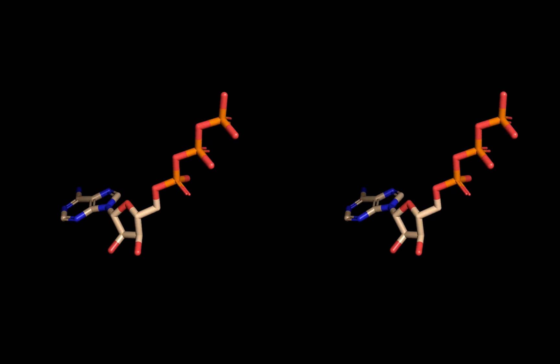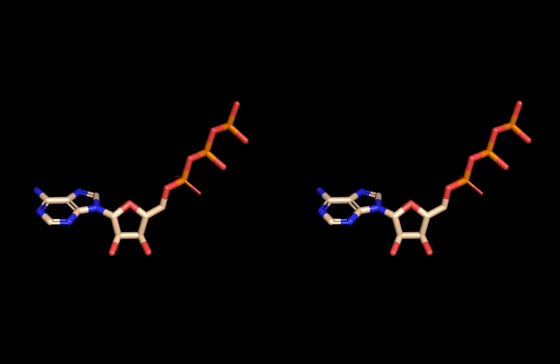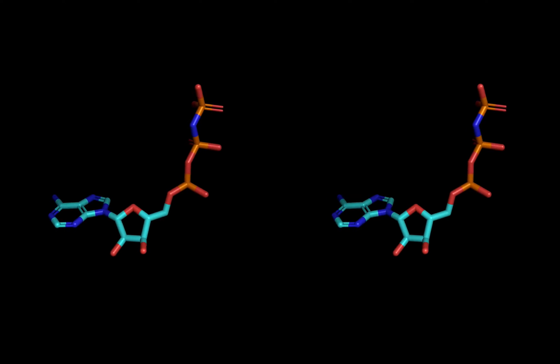First, let's review the structure of ATP. The phosphates are linked together by oxygen atoms, but in this molecule, ANP, the last phosphorus atom is linked through a nitrogen atom.